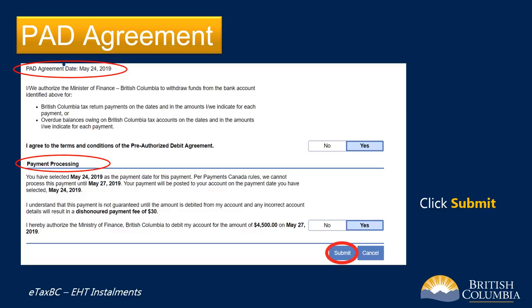Take a moment to review and confirm the banking and payment details you entered are correct. Any incorrect information results in a dishonored payment and a fee of $30. Once you're satisfied everything is correct, click Submit at the bottom of the screen.